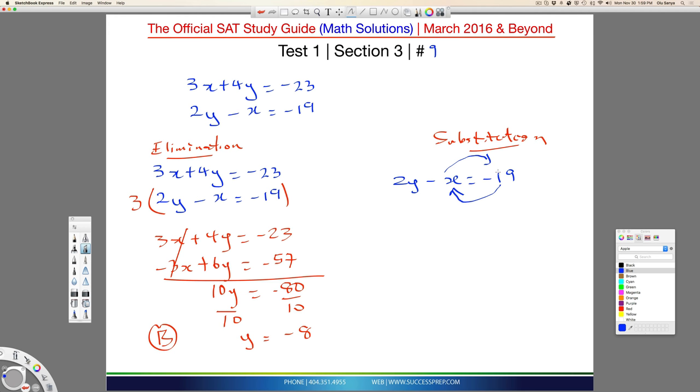But if I move the x over here and I want x by itself, I have to move this 19 over here. So, this negative 19 will become positive when it comes here. So, it becomes 2y plus 19 equal to x.